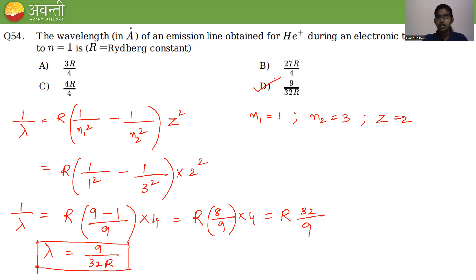The answer is given in option D, so option D is the correct answer. Just substitute the values of n₁, n₂, and atomic number Z into the formula and you will get the answer.